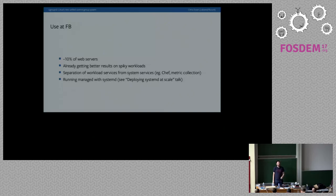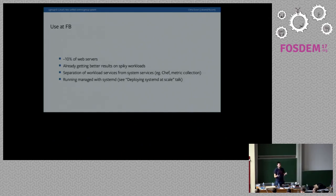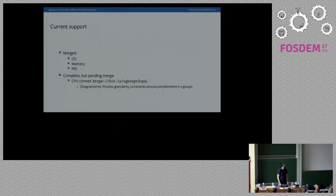If you go to facebook.com right now, there is a one in ten chance you'll hit a server with cgroupv2. We are running a cgroupv2 pool in the tens of thousands of machines. We're investing heavily in cgroupv2 — my main concern is limiting the failure domains between services, preventing cascading failures on a machine, and managing resource allocation across the data center for efficiency. We run cgroupv2 managed with systemd. We have two of the core cgroupv2 maintainers working at Facebook and will continue to drive innovation here.